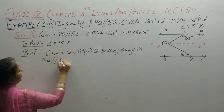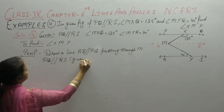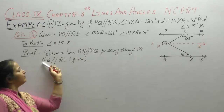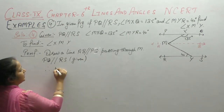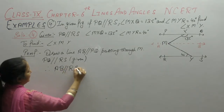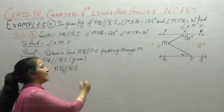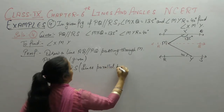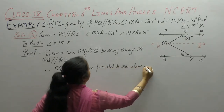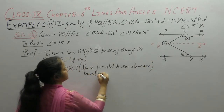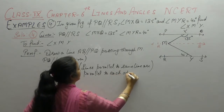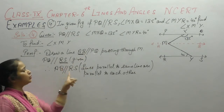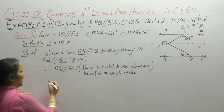PQ parallel to RS is given. Line AB parallel to PQ — this is our construction. AB is parallel to PQ, and PQ is parallel to RS. Therefore AB is also parallel to RS. This is because lines parallel to the same line are parallel to each other.